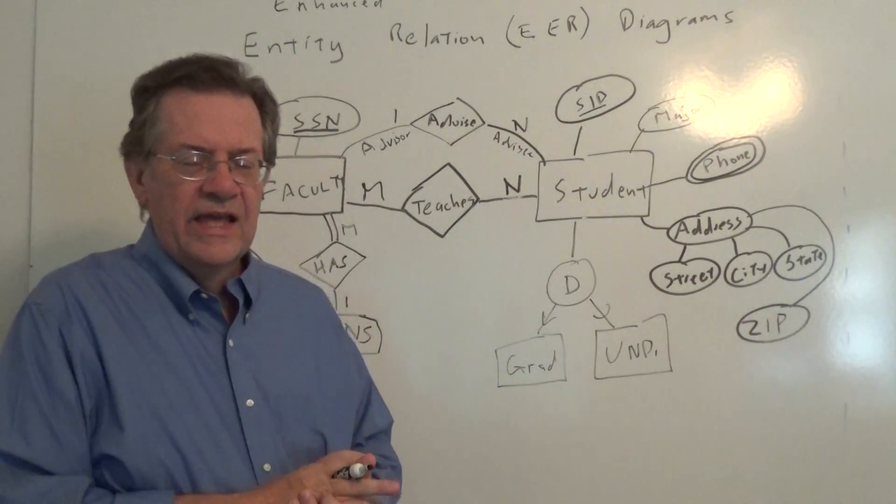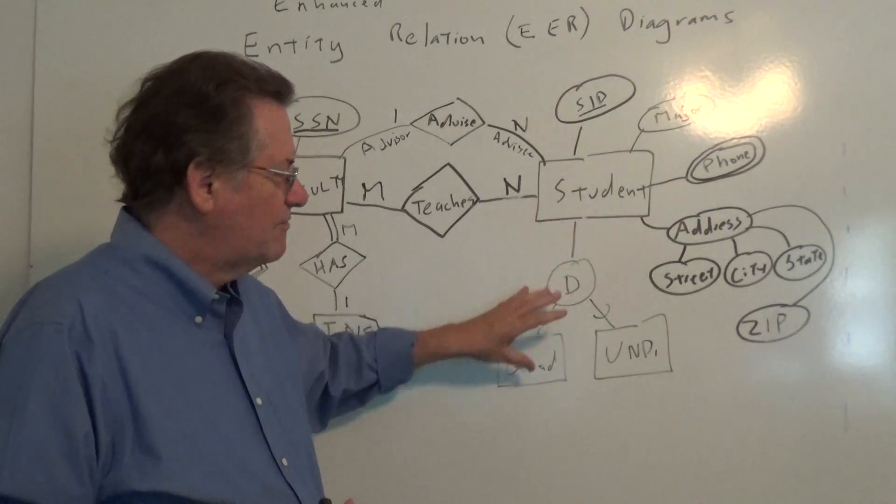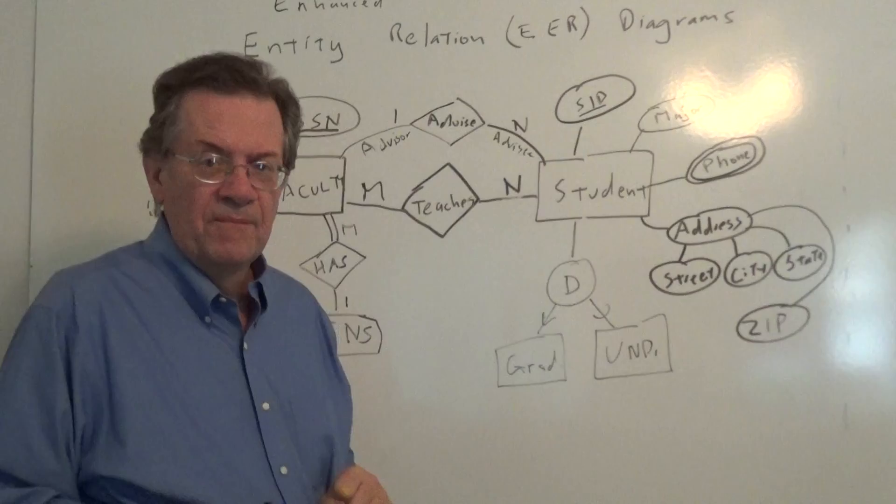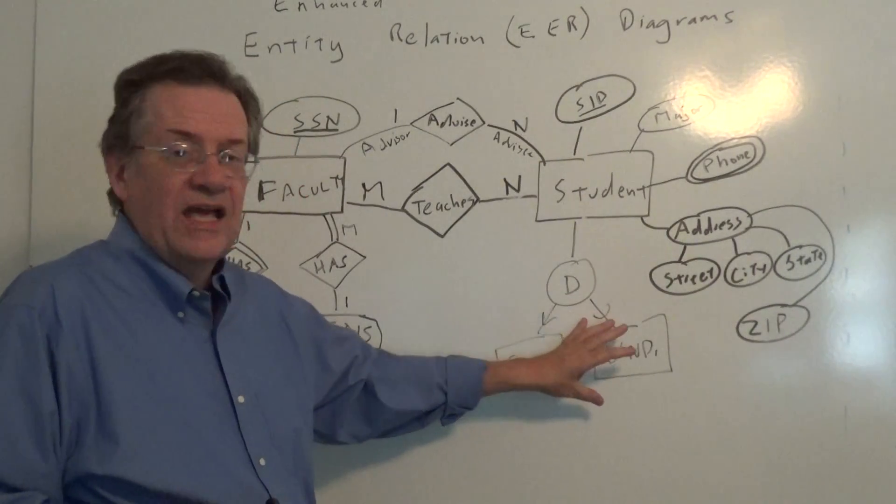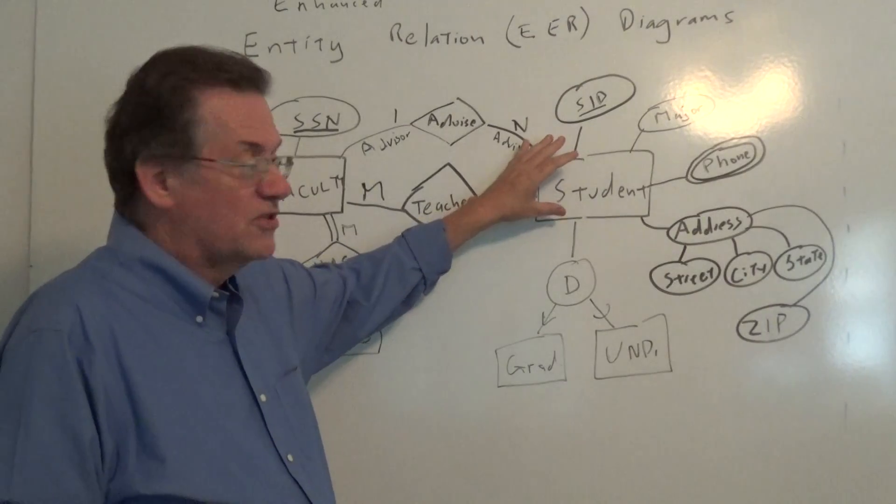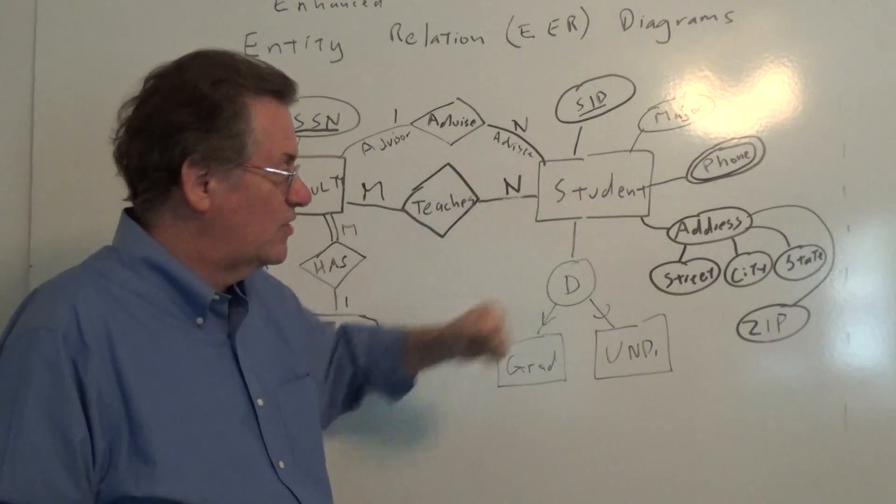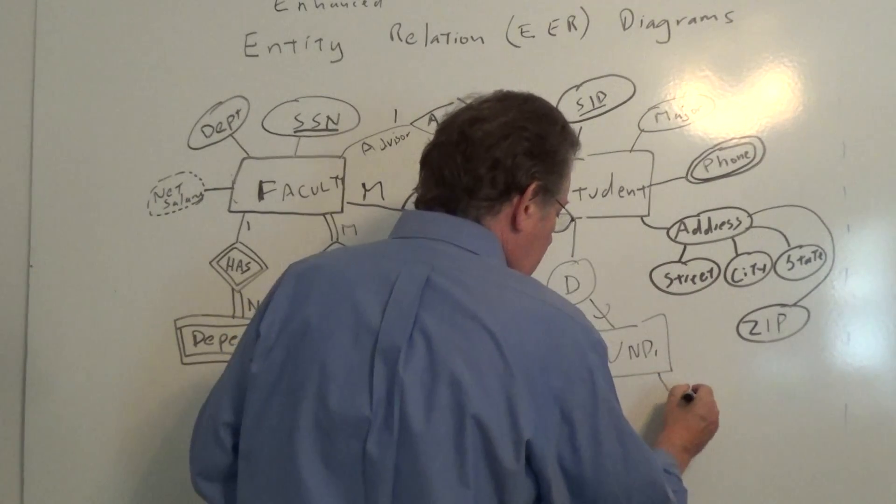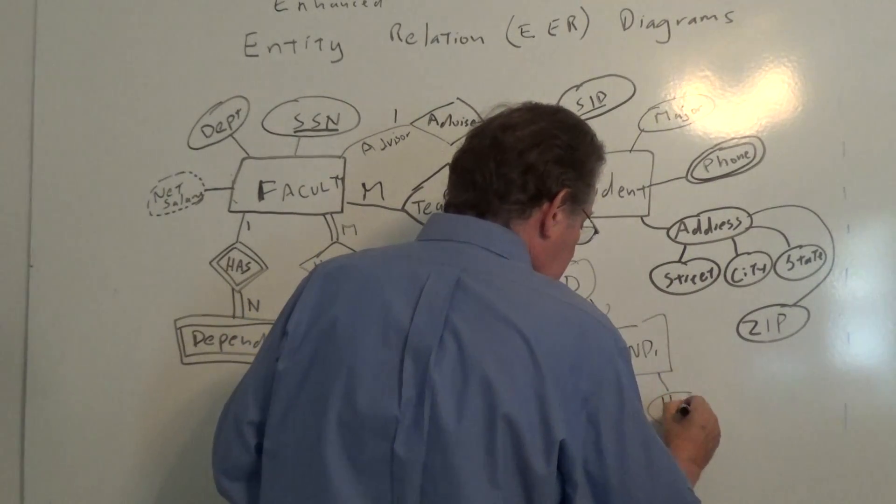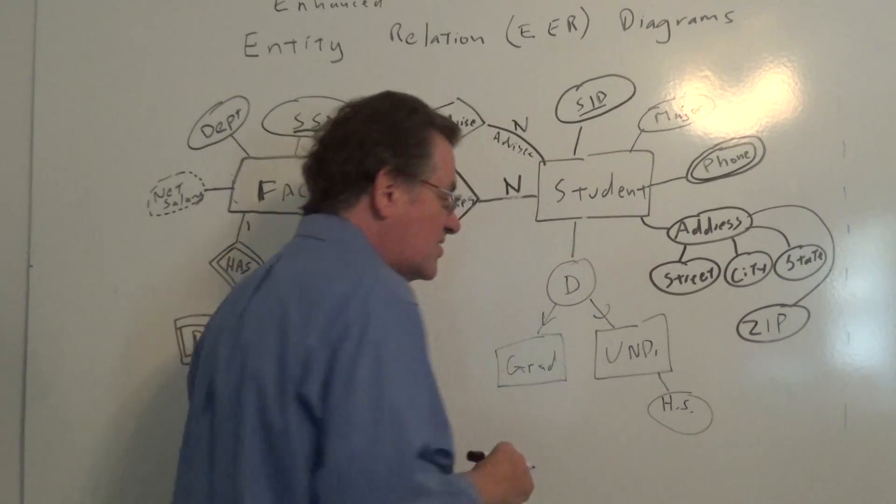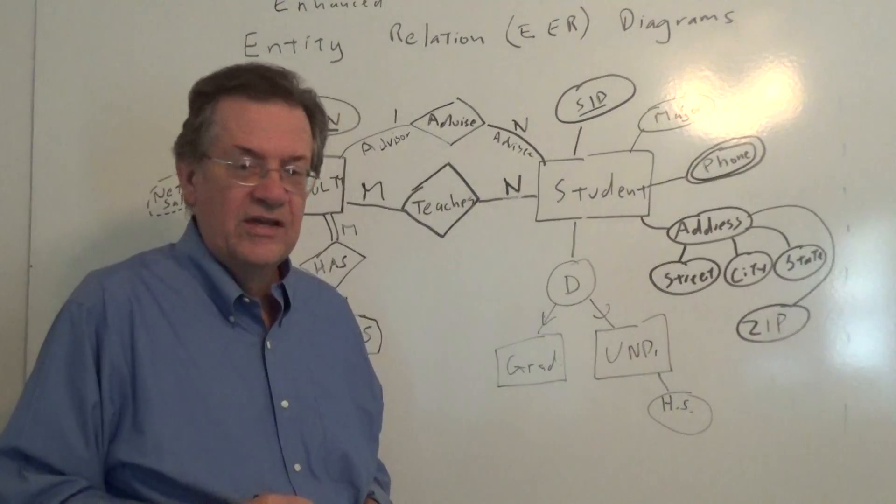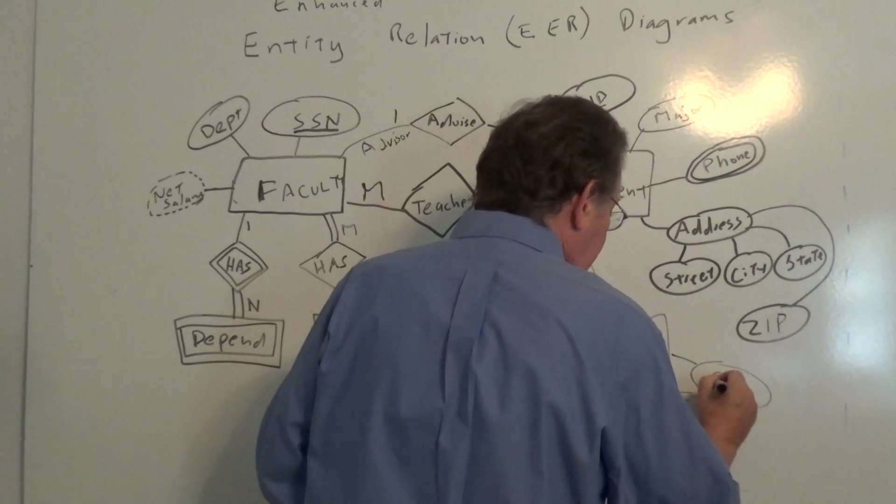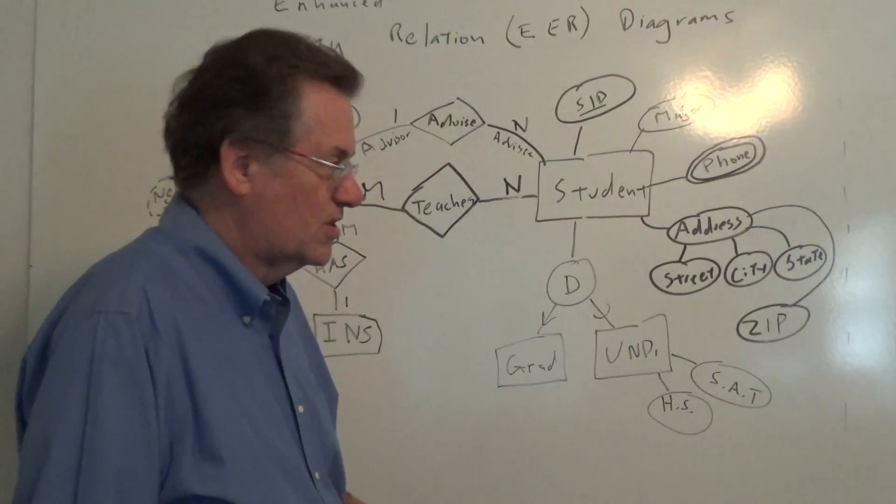And the idea is that when we have the subclassing going on, then what we want to do is decide which attributes go where. And so attributes common to grad and undergrad students would be pushed up to the super class, such as the student ID, the major, phone address, and so forth. Now, at the undergrad, we might have attributes like high school, which high school he or she went to to obtain their degree.